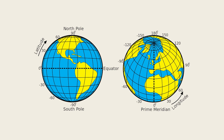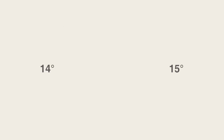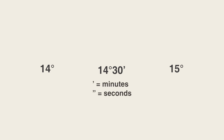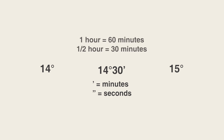The way we measure latitude and longitude is in degrees, minutes, and seconds. Don't be confused — that doesn't necessarily mean it's time-based. That's how we use it as a form of a decimal. For example, there are 60 minutes in an hour, so 60 minutes is one whole degree. So if a location is right between 14 degrees and 15 degrees, instead of saying 14.5 degrees we would say 14 degrees and 30 minutes, because 30 minutes is half of one hour.